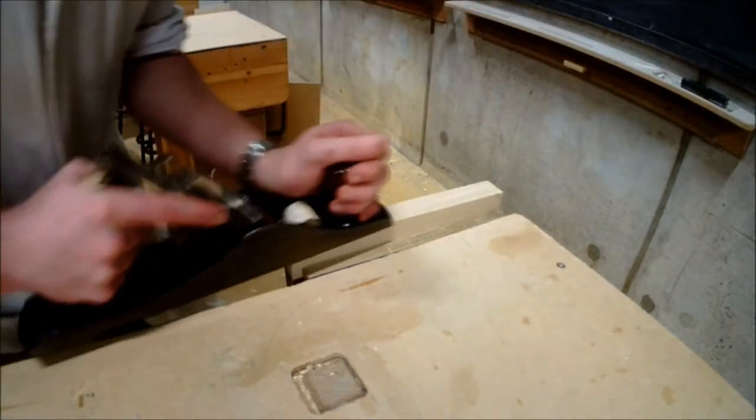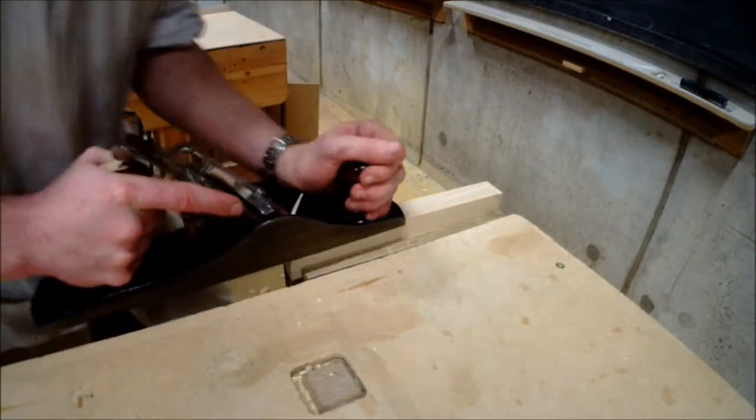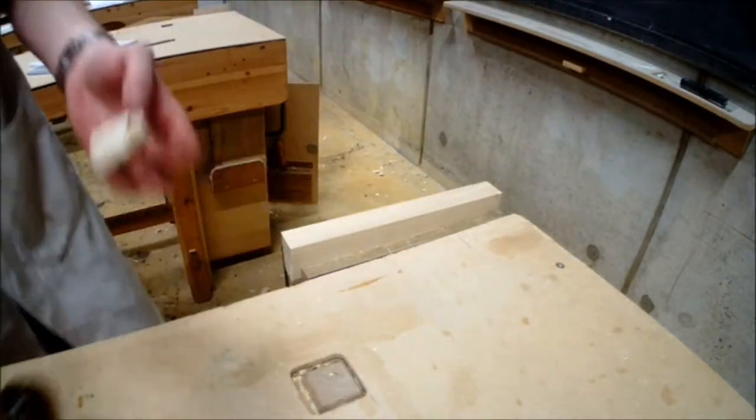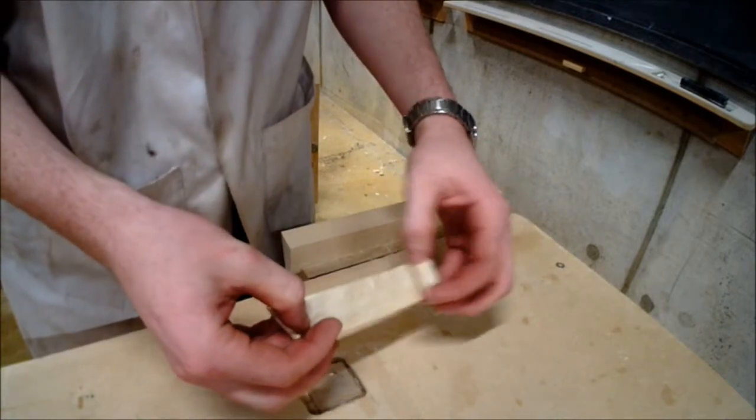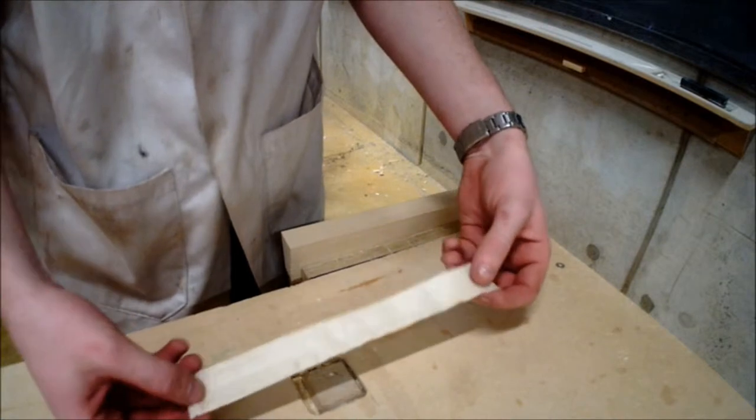As you can see, my wrist, elbow, and shoulder are all in one line. After planing, a shaving from the piece of material is provided. This shows if you are taking off equal material all the way across the piece, as shown in the video.